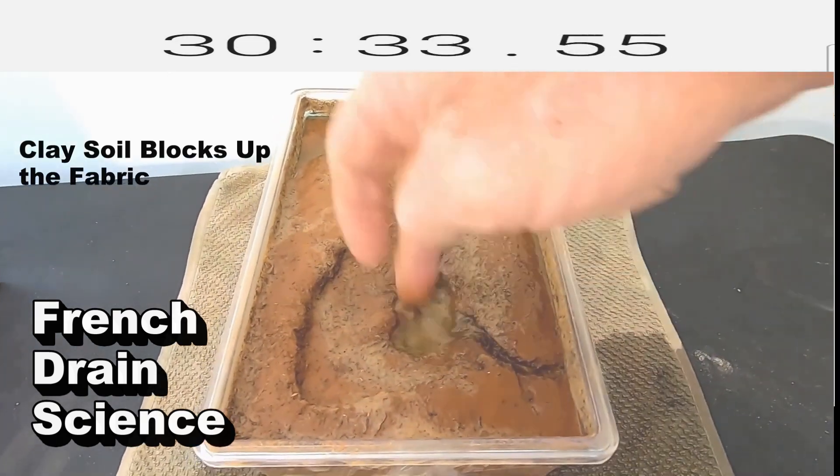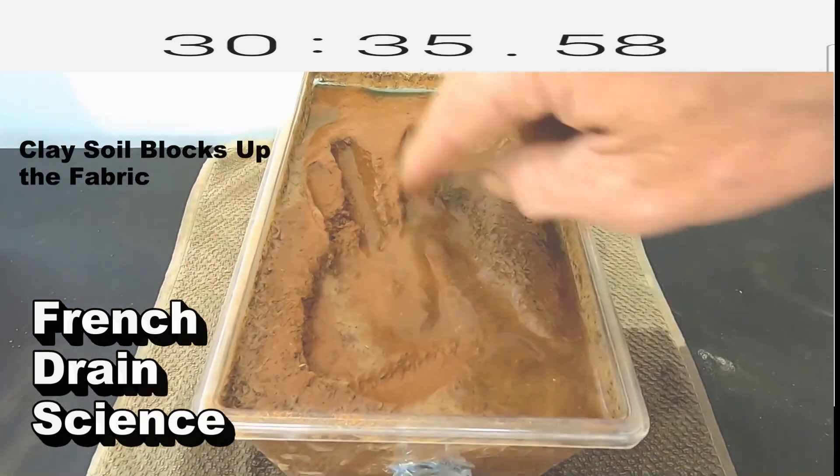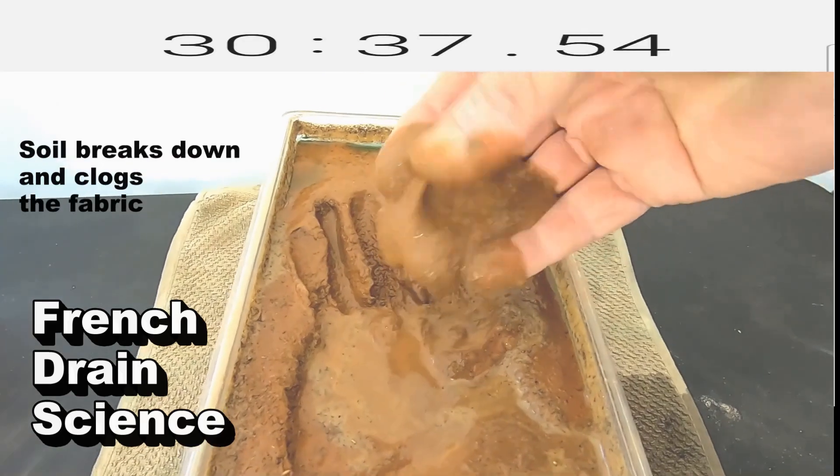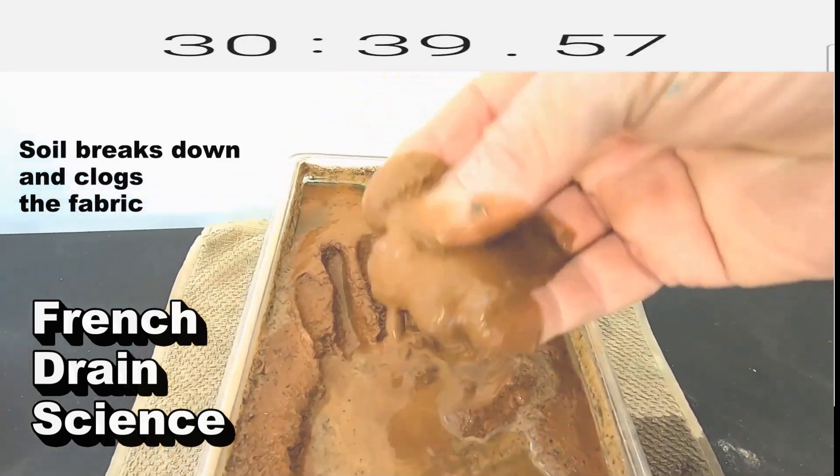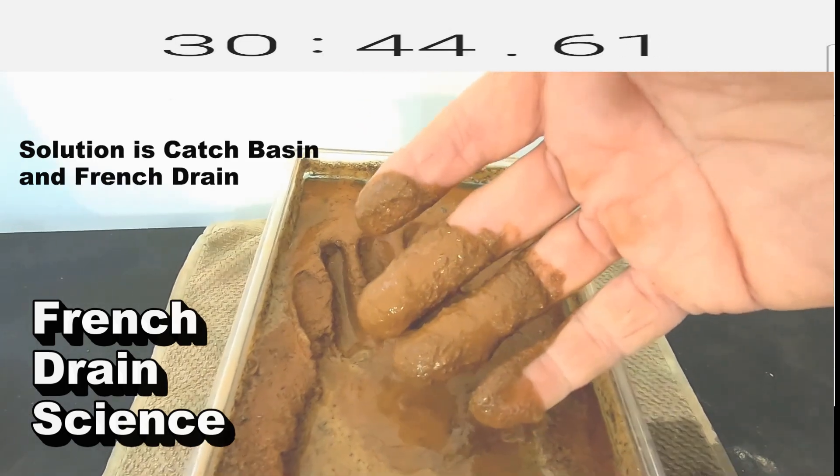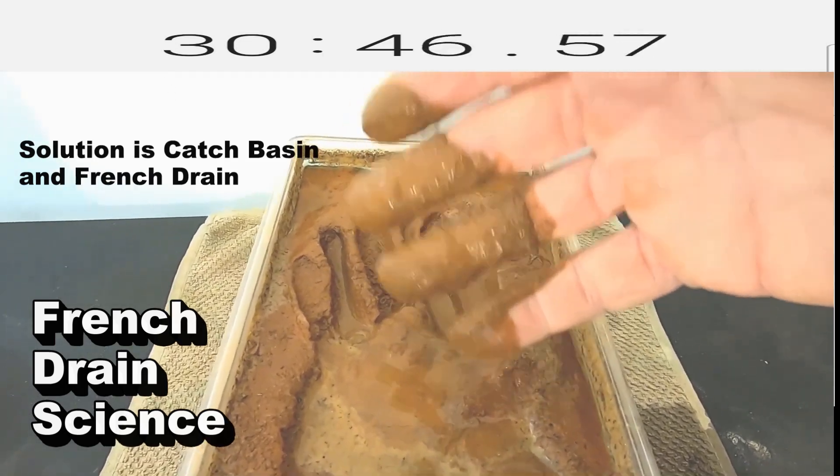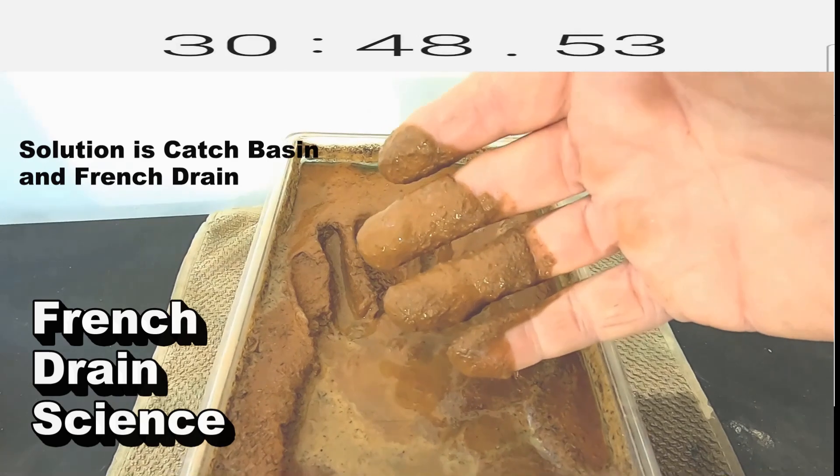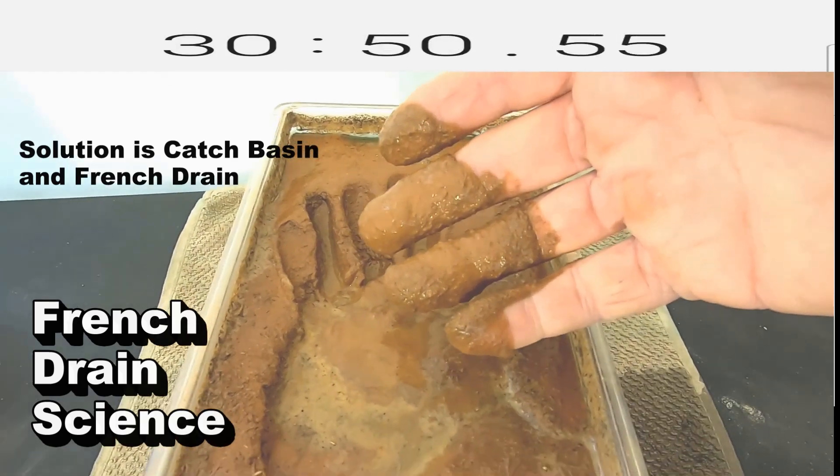Clay soil blocks up the fabric. See how silty that is? That's pure clay. When that soil breaks down it clogs up that fabric. The solution is to add a catch basin and a French drain to every system.